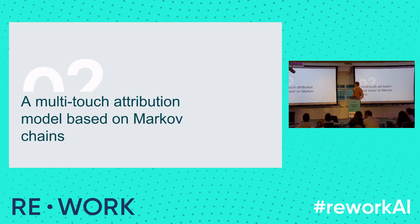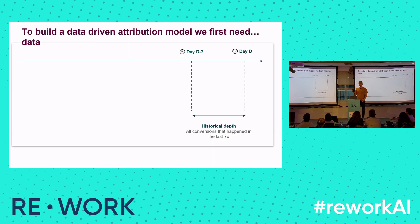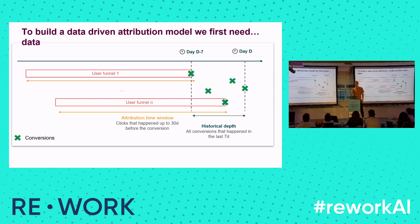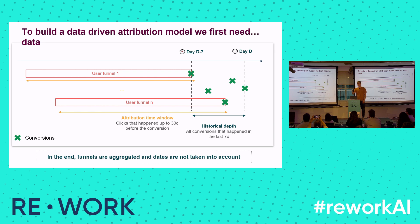Now that we have some basis in marketing, I'll explain how our model works. To build a data-driven model, you obviously need data. We focus on a time window of seven days, getting all the conversions that happen in this window. For each conversion, we get all the clicks that happened up to 30 days before. We then remove the dates of the clicks and aggregate all this data together, so we have sequences of touch points and the number of conversions sharing the same sequences of channels.